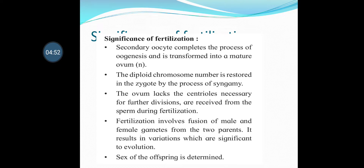Fertilization involves fusion of male and female gametes from two parents, resulting in variation which is significant to evolution. Since it is sexual reproduction, features of male and female are combined or mixed and we can see variation. The next significance is that the sex of the offspring is determined.